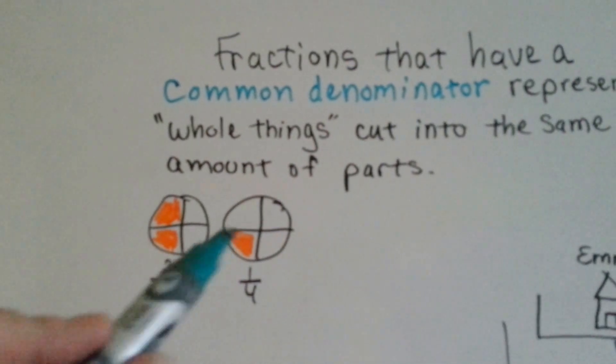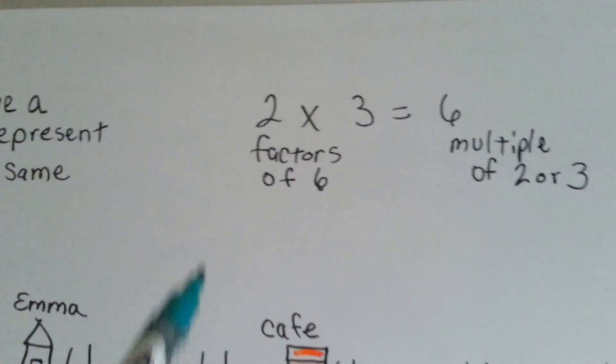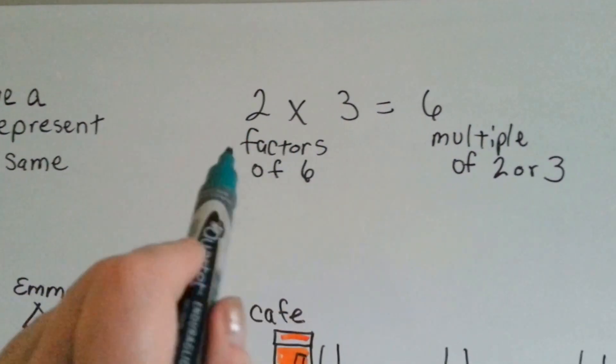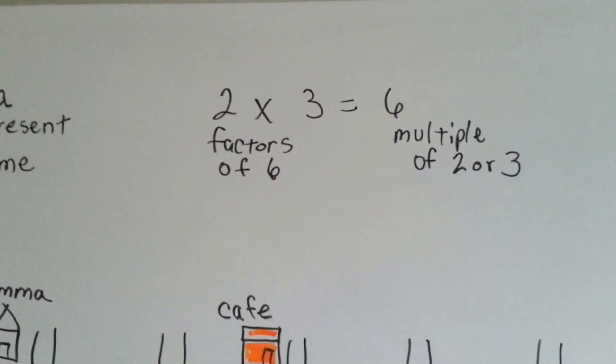See, both of these are cut into four parts, so they have the same denominator of four. I want you to remember that factors are the numbers you multiply together to get an answer, and the multiples are the answers. Keep that in mind.